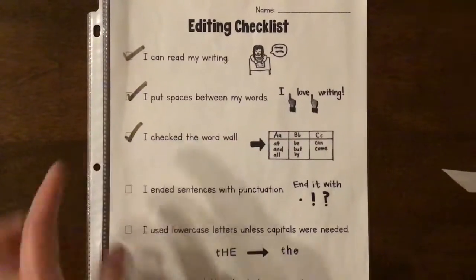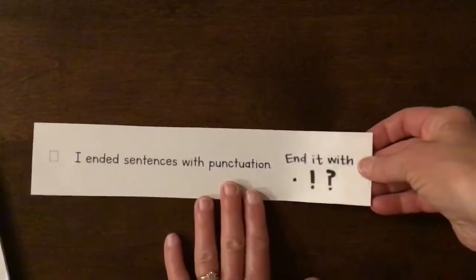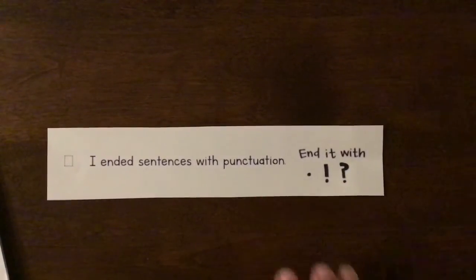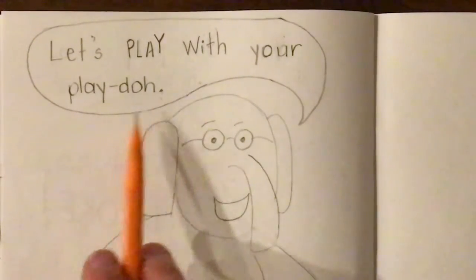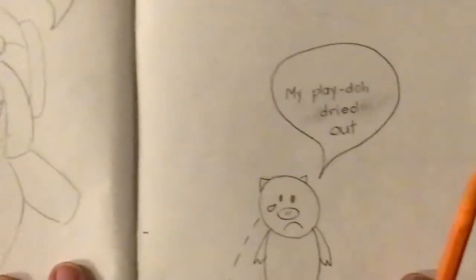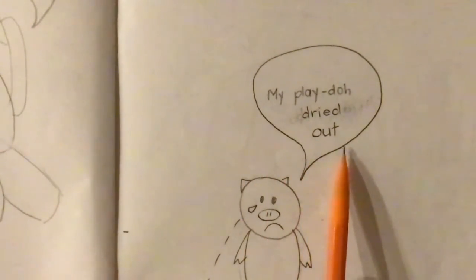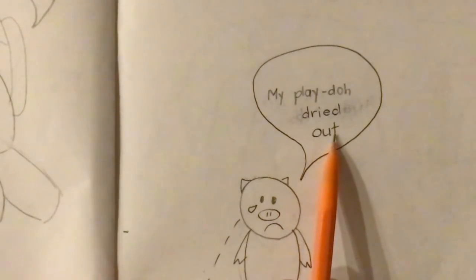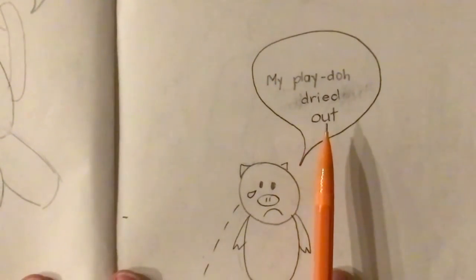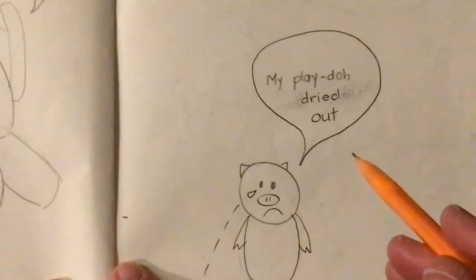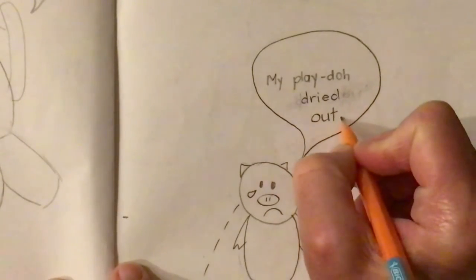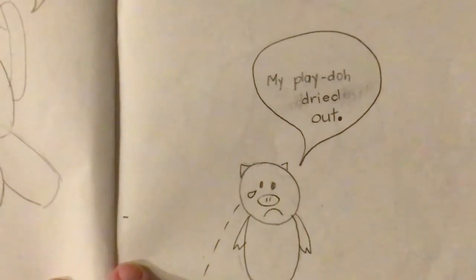I have checked three things on the editing checklist. Now I am ready to make sure that I ended sentences with punctuation. 'Let's play with your Play-Doh' — yep, there's a period. Let's check the next page. 'My Play-Doh dried out' — oh goodness, no ending punctuation there. Let me think about Piggy and how she's feeling. She's feeling sad, might be a little upset. I think I'm going to put a period there. Now I can check off that I checked all of my sentences for end punctuation.